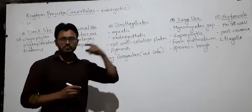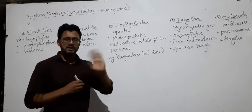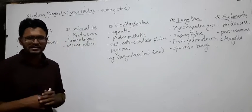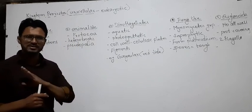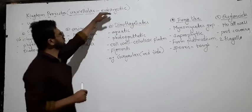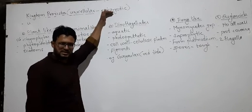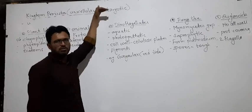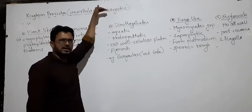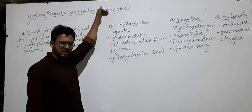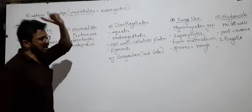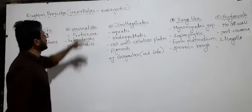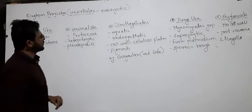Eukaryotic means they are having a prominent nucleus. Waha jo Kingdom Monera tha, waha jo bhi nucleus present nahi tha - bacteria ke andar prominent nucleus present nahi rehta, cell organelles waha present nahi rehte. Lekin ye eukaryotic hain, inke andar nucleus present rahega aur different cell organelles hain - endoplasmic reticulum, Golgi complex, ribosome, mitochondria - yeh present hote hain yaha. Vaha prokaryotic cell hai aur yaha saare ke saare eukaryotic cells hain.